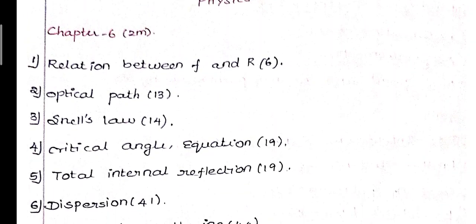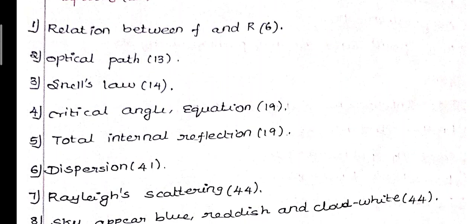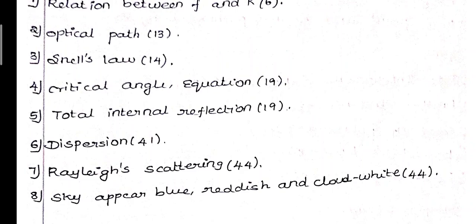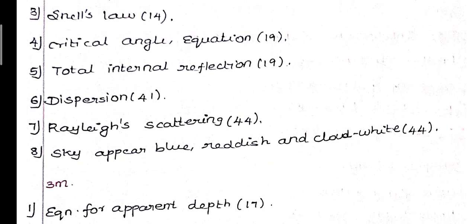Chapter 6 Ray Optics 2-mark questions: 1st question - relation between F and R, page number 6. 2nd question - optical path, page number 13. 3rd question - Snell's law, page number 14. 4th question - critical angle equation, page number 19. 5th question - total internal reflection, page number 19. 6th question - dispersion, page number 41. 7th question - Rayleigh scattering, page number 44. 8th question - why does the sky appear blue, reddish, and why does cloud appear white, page number 44.